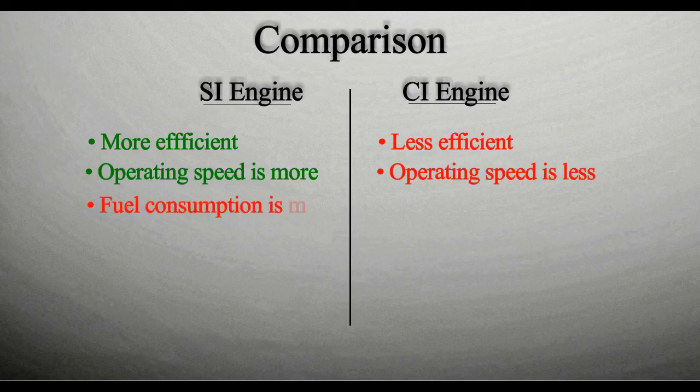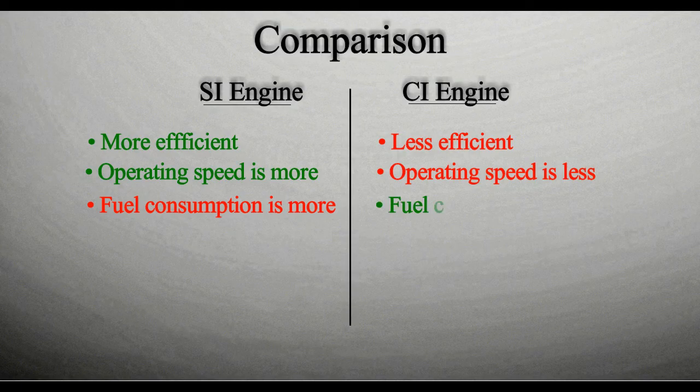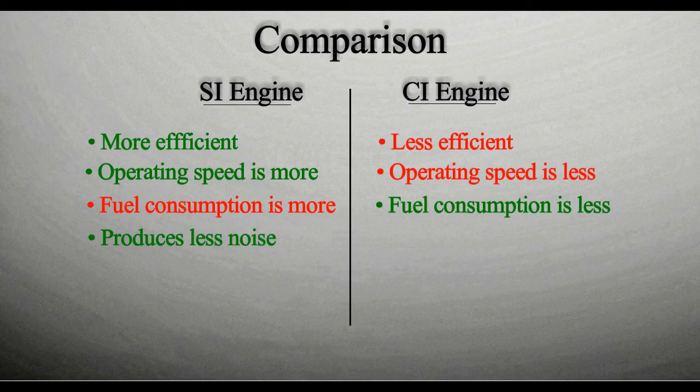SI engines consume more fuel than CI engines. SI engines create less noise, while CI engines create more noise as their compression ratio is higher.